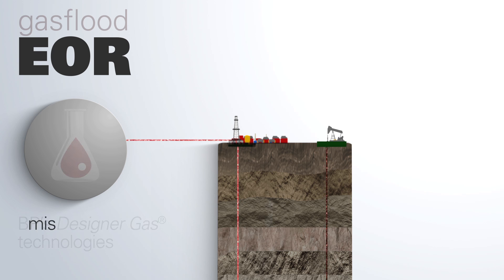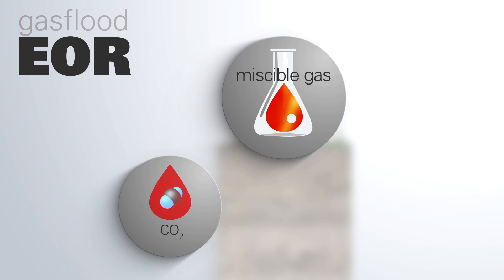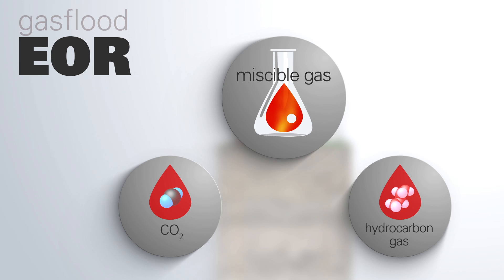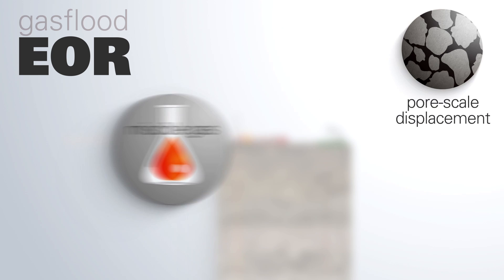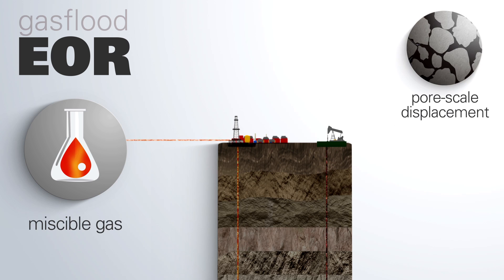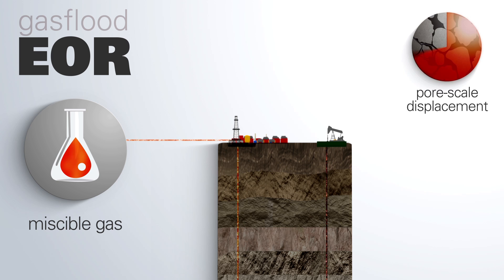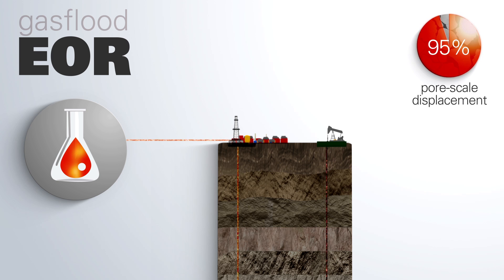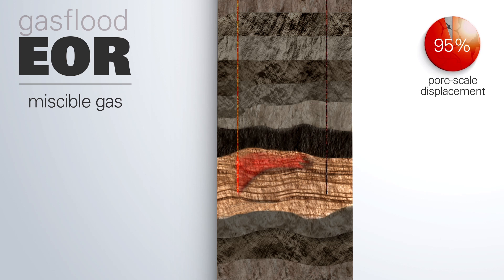Miscible gas is usually made of carbon dioxide or hydrocarbon gas, or a mixture of both. It is one of the most effective EOR methods for pore-scale displacement, typically displacing 95% of the residual oil that it comes in contact with.